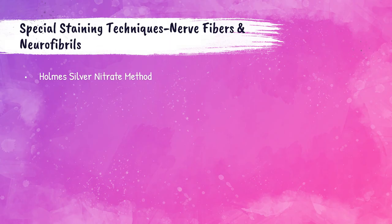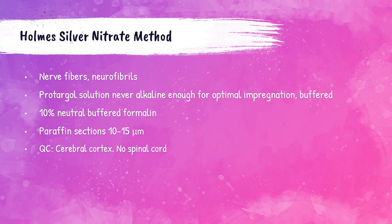The Holmes silver nitrate method is for staining nerve fibers and neurofibrils. Holmes believed that the protargol solution could not reach sufficient alkalinity to optimally impregnate tissue, so this technique was modified by creating a buffered impregnating solution using pyridine to make it alkaline. Tissue should be fixed in 10% NBF and cut at 10–15 microns. Quality control should be cerebral cortex tissue — spinal cord tissue cannot be used because all axons appear in cross section.